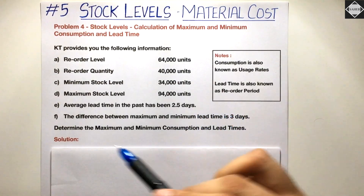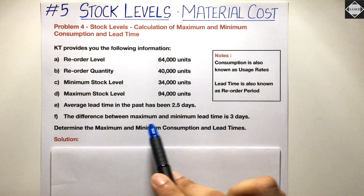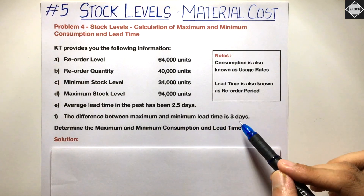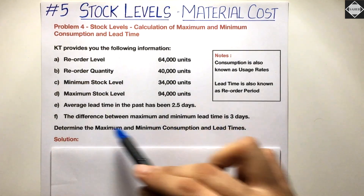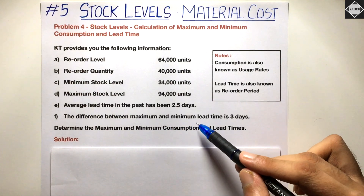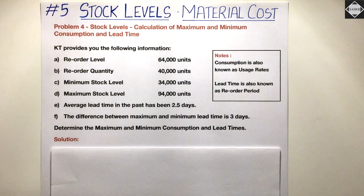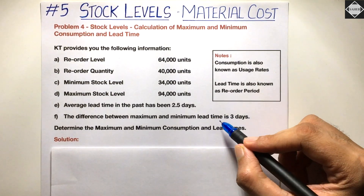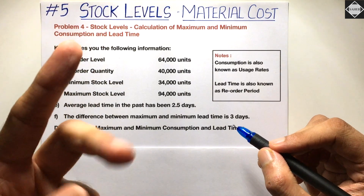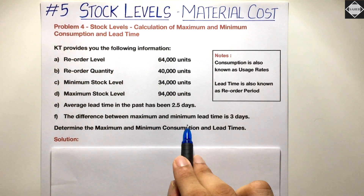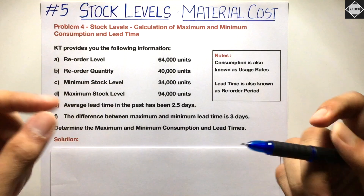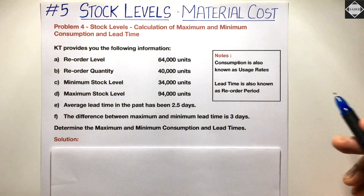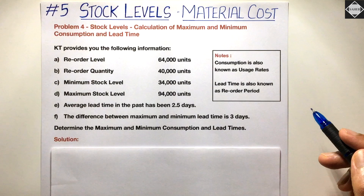They also say the difference between maximum and minimum lead time is 3 days. Since they are talking about maximum and minimum lead time, we will calculate maximum and minimum lead time first, because we have information about the average lead time and the difference between them — we can use that to solve.